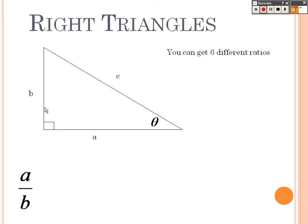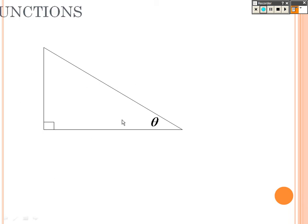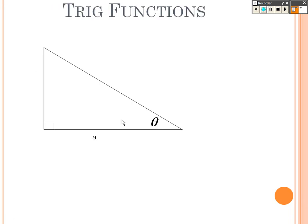We have six different ratios that we could do. You could do A over B, A over C, B over A, B over C, C over A, and C over B. So why are those so important? They're so important because this is how we can find things.